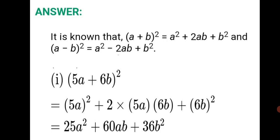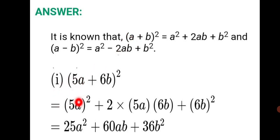We have expanded the given binomial square using the formula (a+b)² = a² + 2ab + b². Whichever term is in place of a, we write its whole square; plus 2 times the a-term and b-term; then the square of the b-term. This is how each question will be solved.